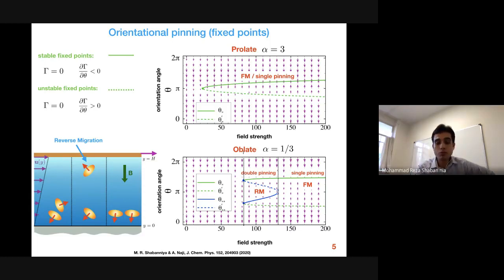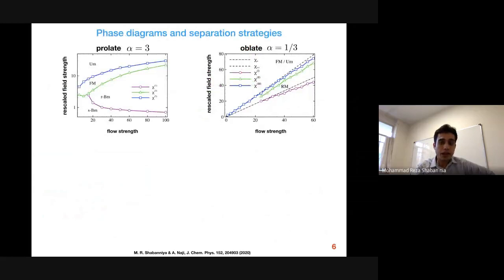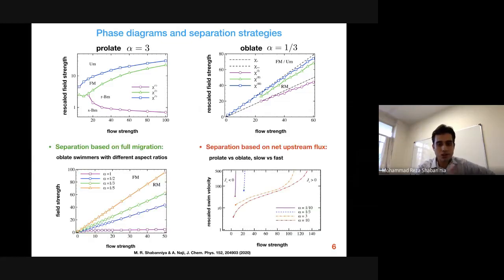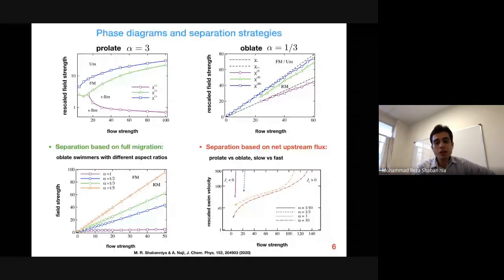Those moving upward will end up near the upper wall. Plotting these phase diagrams, we can suggest two mechanisms of separation. The sudden jump in the fraction of swimmers near the lower wall can be used to separate oblate swimmers based on aspect ratio in the full migration regime. Also, because of the stable upstream swimming direction of both prolate and oblate swimmers in the pinning regime, we can rely on the opposite net upstream flux to separate swimmers based on their different aspect ratios.